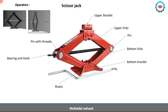We will make the boundary diagram for the scissor jack shown here. This is a simple mechanical device used for jacking up vehicles during repair or while changing a tire. Before making the boundary diagram, we will understand the various components of the assembly. There is a base bracket which is supporting the weight, and rivets connecting the lower links to the base bracket. There are pins over here, which are revolute joints.